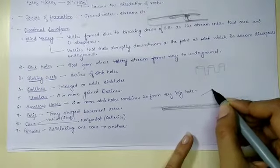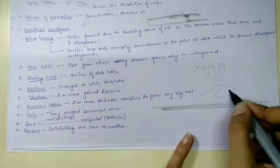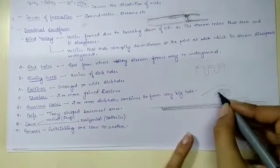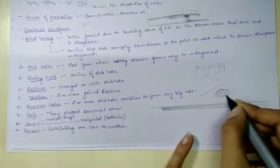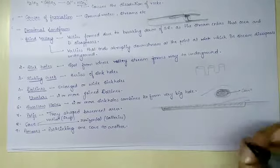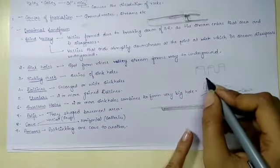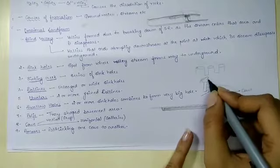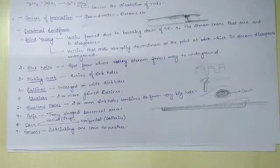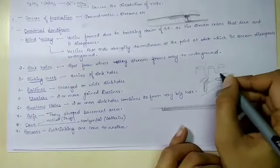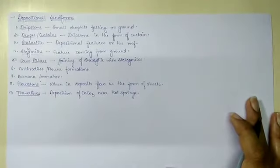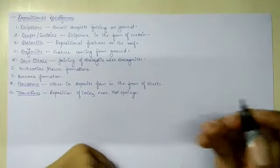Next are caves in karst topography — similar to coastal caves but here a hard rock structure is embedded with soft rock, and the soft rocks get dissolved, forming a hollow structure known as a cave. Caves are of two types based on orientation: when they are vertical they are known as shafts, and when they are horizontal they are known as galleries. Next are ponors — when a cave is linked with another cave via a pathway, that pathway is known as a ponor.